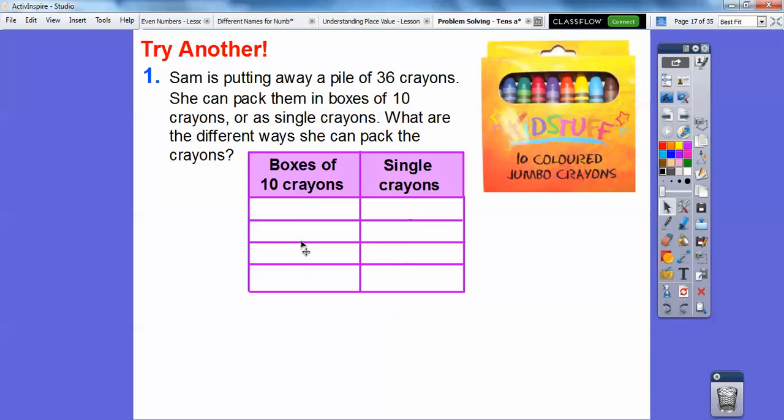So if she does 3 boxes of 10 crayons, that would count for 30. So for 36, we'd need 6 more right there.